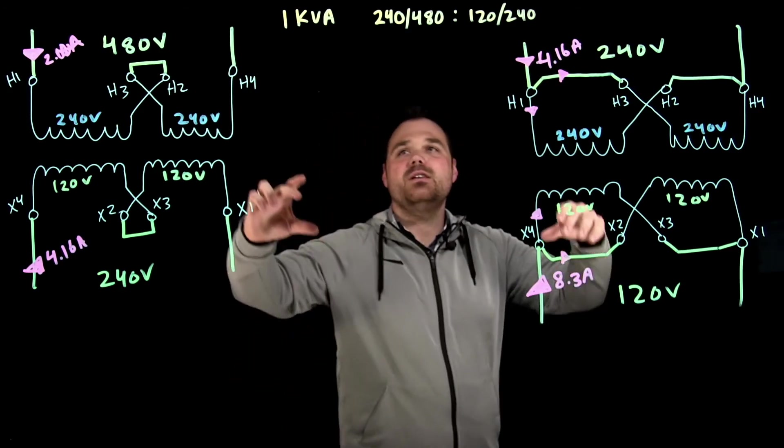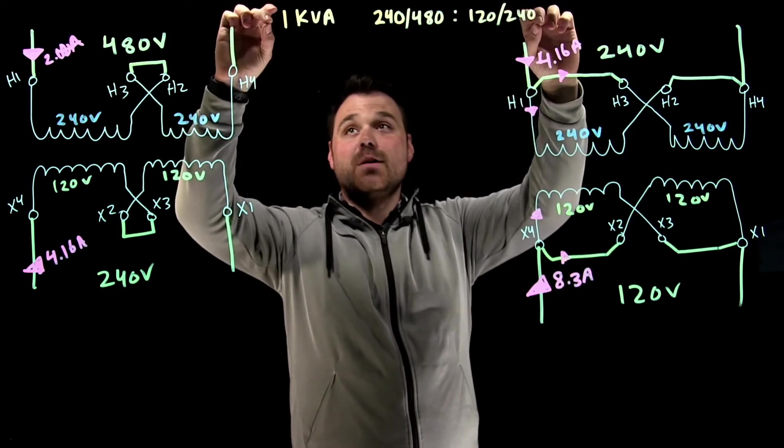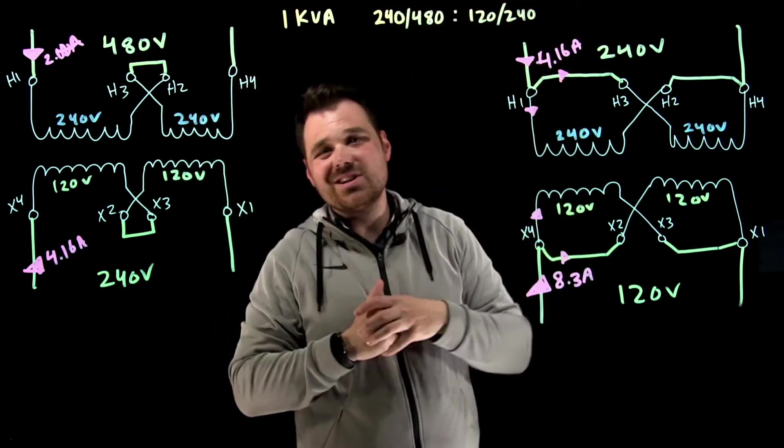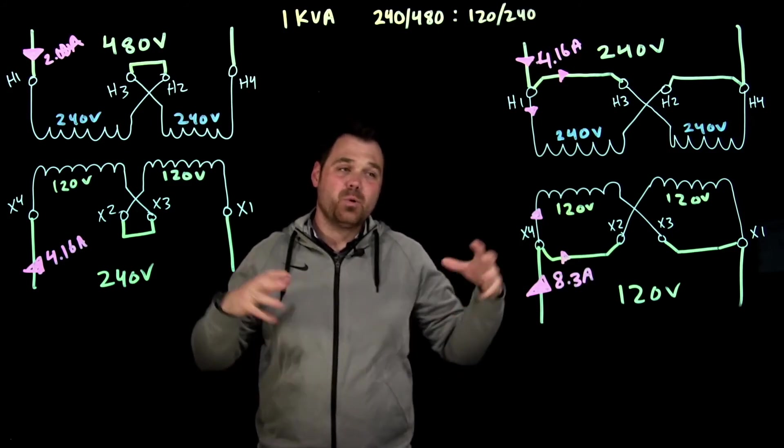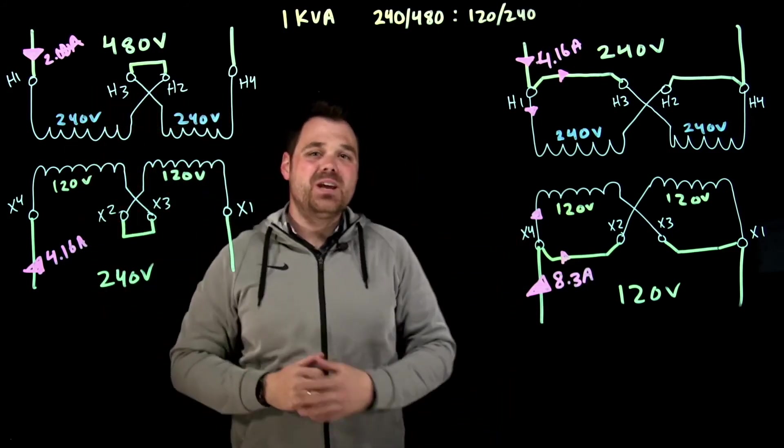Those would be the winding ratings of my transformer. And I'd probably only be given this information, my total KVA and then my voltage. I'd have to do the math to figure out what each individual winding and what the single half VA would be good for.